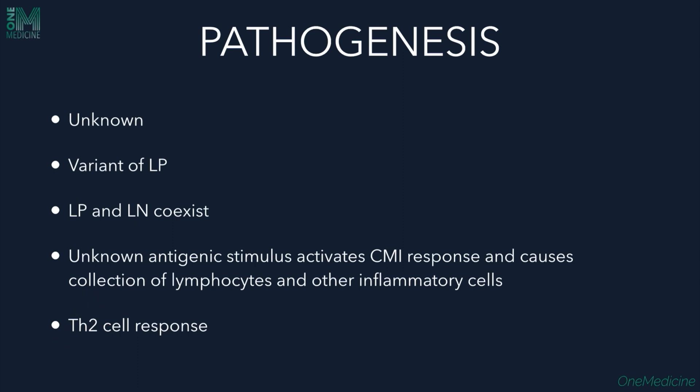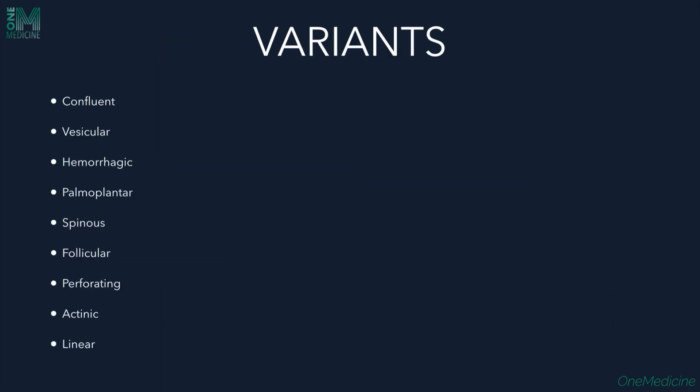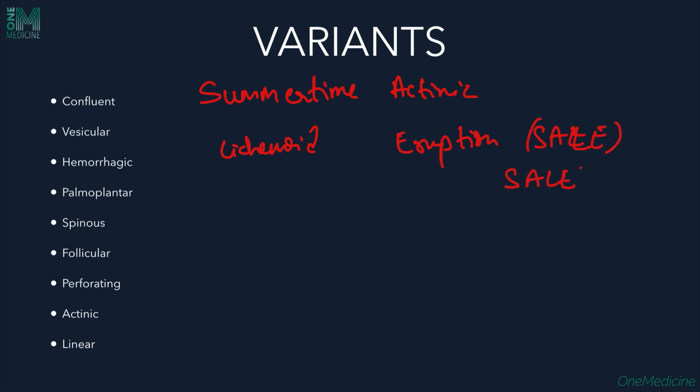An unknown antigenic stimulus activates a cell-mediated immune response with T-helper type 2 involvement, causing collection of lymphocytes and inflammatory cells. Clinically it presents with localized or sometimes generalized lesions. Mucosa can be involved, showing discrete grouped grayish papules of about 1 mm on the palate and gum. Nails can be involved, showing longitudinal beaded ridges, terminal splitting, and irregular pitting. Variants include confluent, vesicular, hemorrhagic, palmoplantar, spinous, follicular, perforating, actinic, and linear types. The summertime actinic lichenoid eruption (SALE), described by Bady in 1978, is an actinic variant affecting Fitzpatrick skin types 4 and 5.